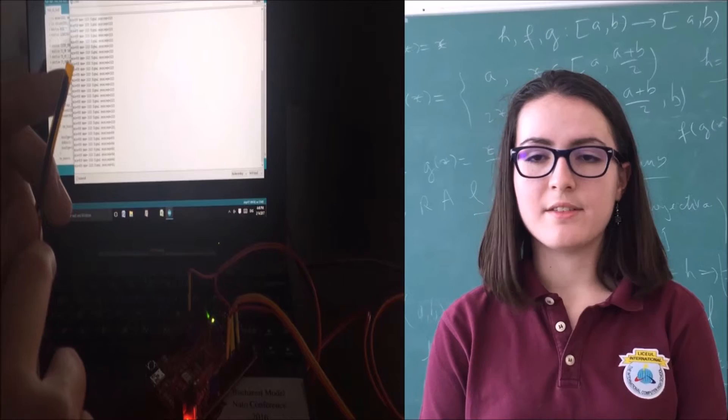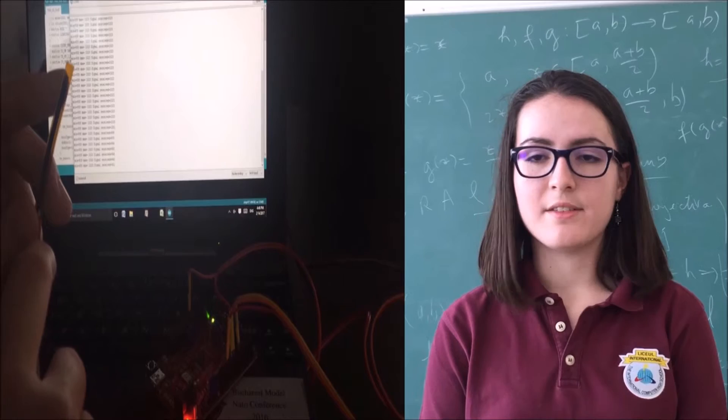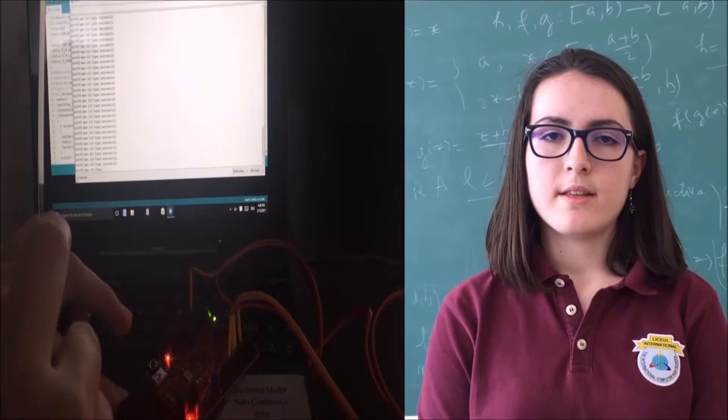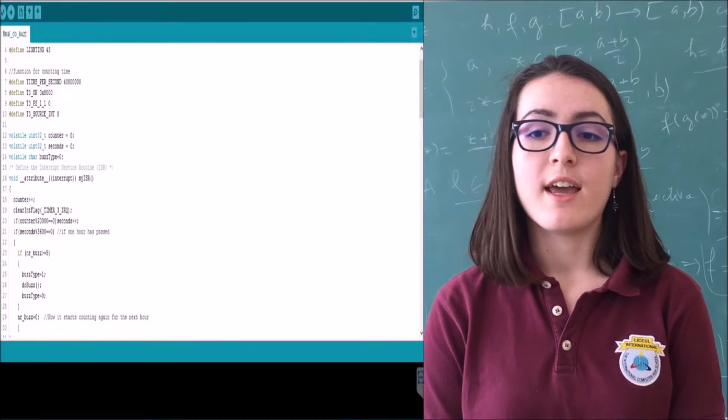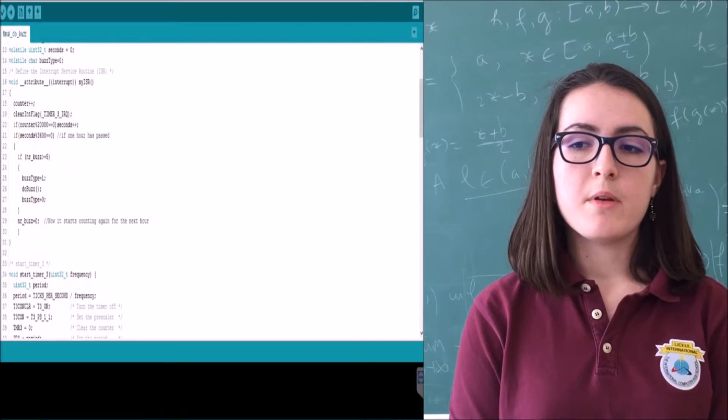This signal has values between 1023 and zero, 1023 being for the straight position. It means that hopefully for every person the maximum value will be 1023 and the minimum value will be based on how much he or she is allowed to bend without being considered bad for his or her health.